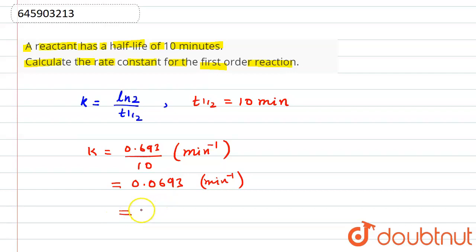And in another form, we can write it as 6.93 × 10^-2 per minute.